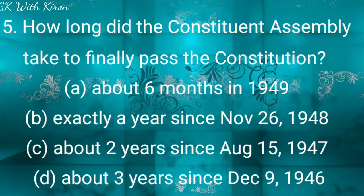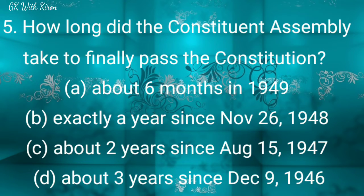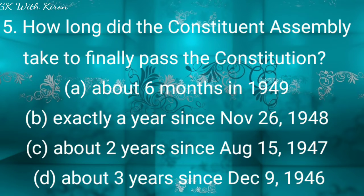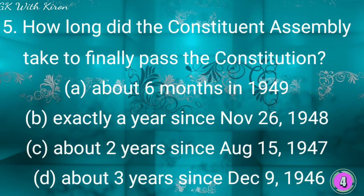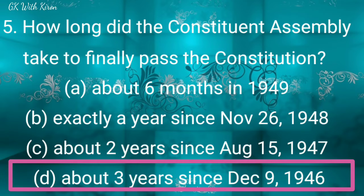Question five: How long did the Constituent Assembly take to finally pass the Constitution? Option A: about six months in 1949, option B: exactly a year since November 26, 1948, option C: about two years since August 15, 1947, and option D: about three years since December 9, 1946. The correct answer is option D: about three years since December 9, 1946.